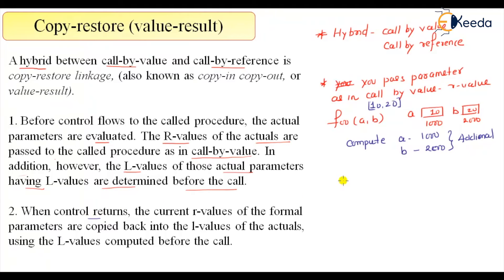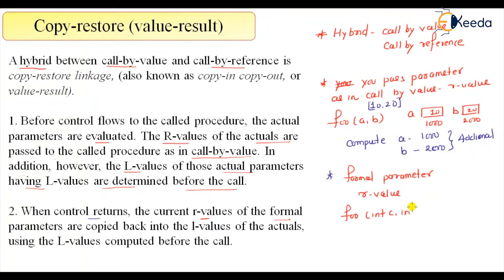When control returns, the current R-value of the formal parameter is used. There will be a formal parameter — suppose the function is implemented as foo(int C, int D) and C++ and D++. So C and D are the formal parameters. R-value copied in is 10 for C and 20 for D, so C++ becomes 11 and D++ becomes 21.